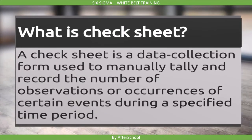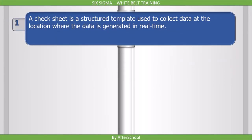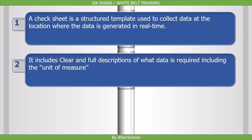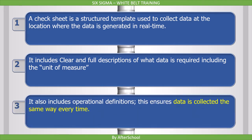What is a check sheet? A check sheet is a data collection form used to manually tally and record the number of observations or occurrences of certain events during a specific time period. It is a structured template used to collect data at the location where the data is generated in real time. It includes clear and full descriptions of what data is required, including the unit of measure, and also operational definitions. This ensures data is collected the same way every time.